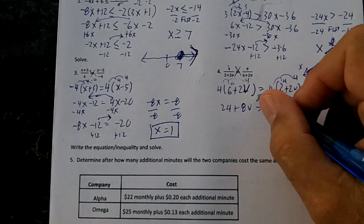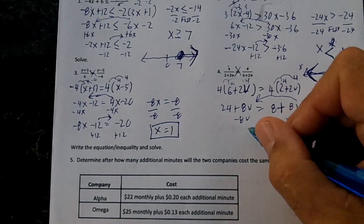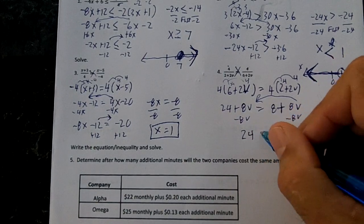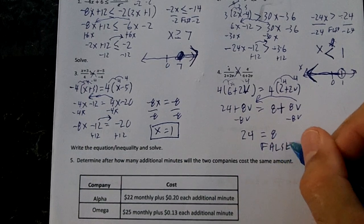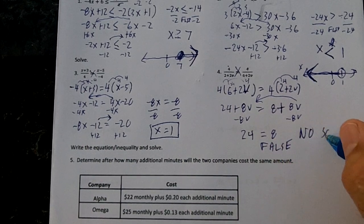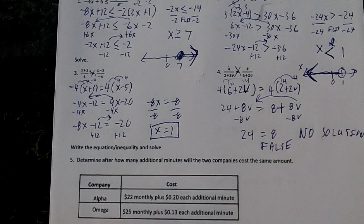Okay. I'm going to take this 8v and move it over, and what is going to happen to my 8v's? They're going to cancel out. So I'm going to have 24 equals 8. That is false. So I'm going to have no solution. If this were true, it would be infinitely many.